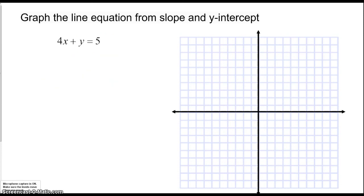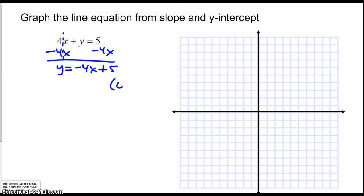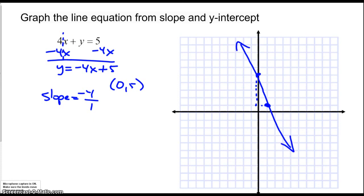This next equation isn't in slope-intercept form — it's in standard form. But I can use algebraic manipulation to convert it. Subtracting 4x from both sides gives me y equals negative 4x plus 5. Now I can read off that the y-intercept is at 0, 5 and the slope is negative 4, meaning I go down 4 for every 1 to the right. Using those two points, I can draw the line.